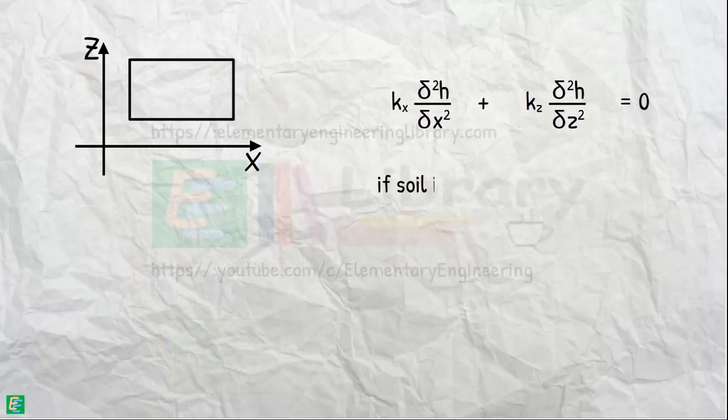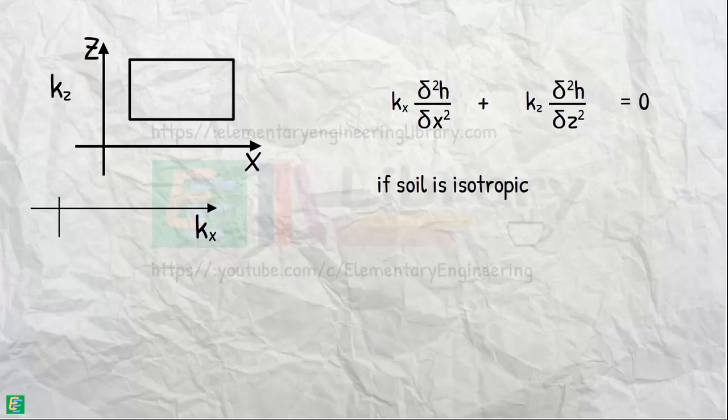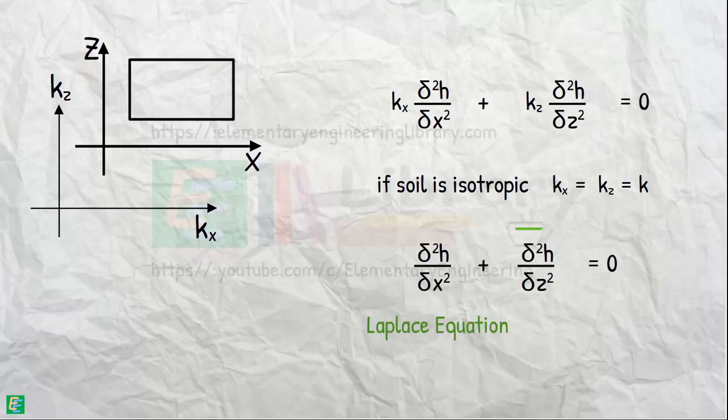If the soil had been isotropic, then its permeability in the x direction and z direction would have been equal, and the equation would have become a Laplace equation.